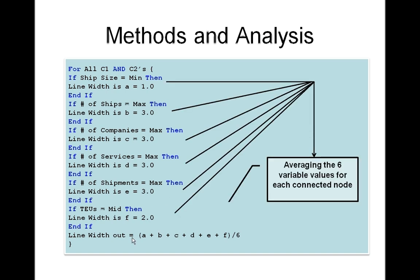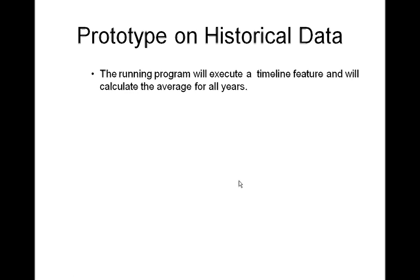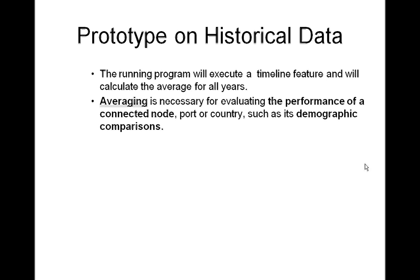Finally, the final line weight variable averages the deduced values to obtain a final weight for the connected node or country. The running program will execute a timeline feature and will calculate the average for all years. Averaging is necessary for evaluating the performance of a connected node, which is a port or country, such as its demographic comparisons.